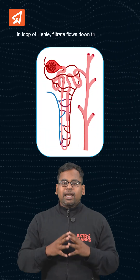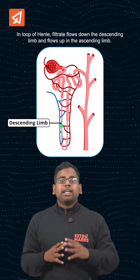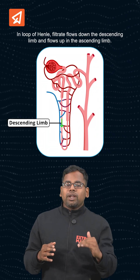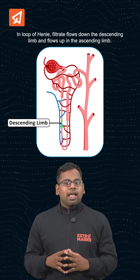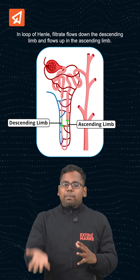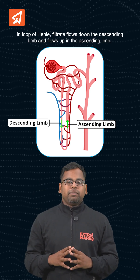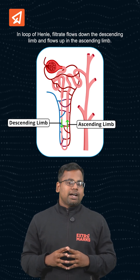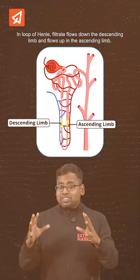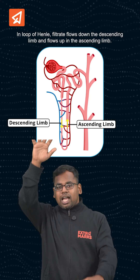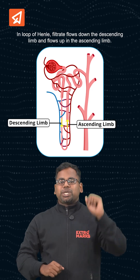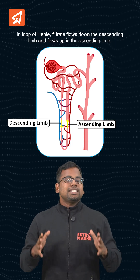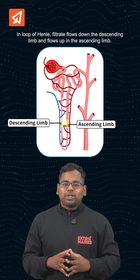In the loop of Henle, the filtrate flows down in the descending limb and flows up in the ascending limb. At the same time, blood in the vasa recta starts flowing in the opposite direction. This is called counter current.